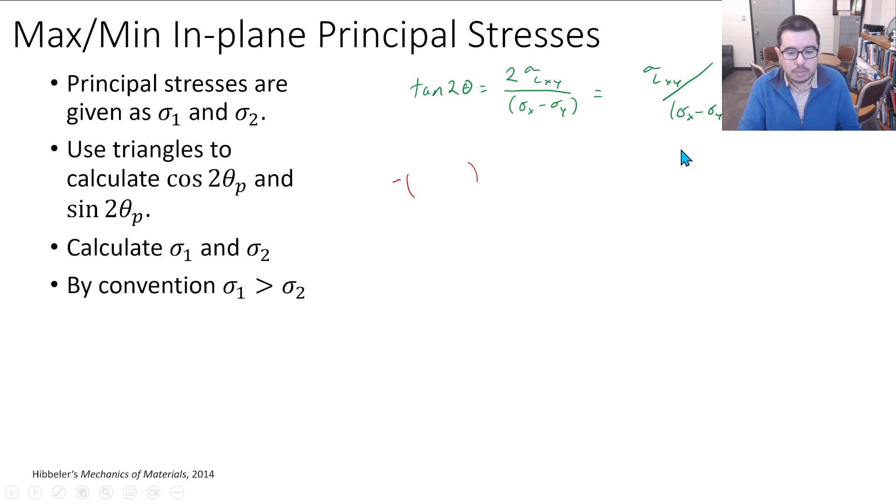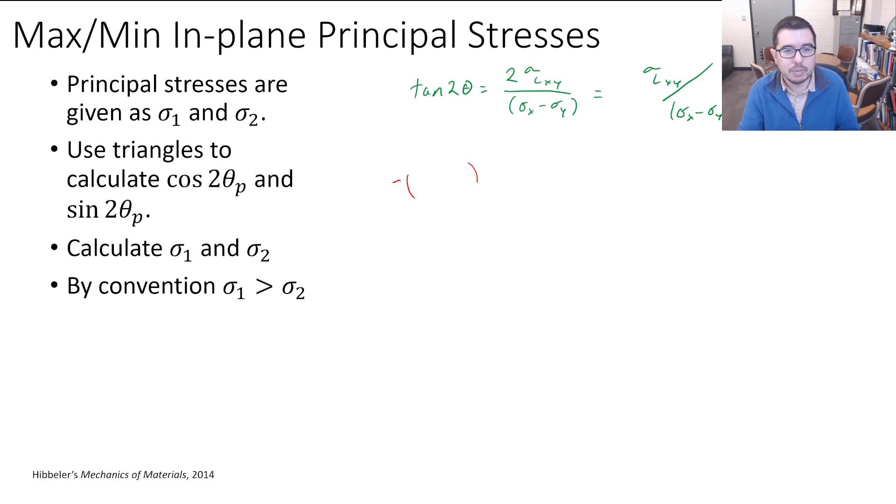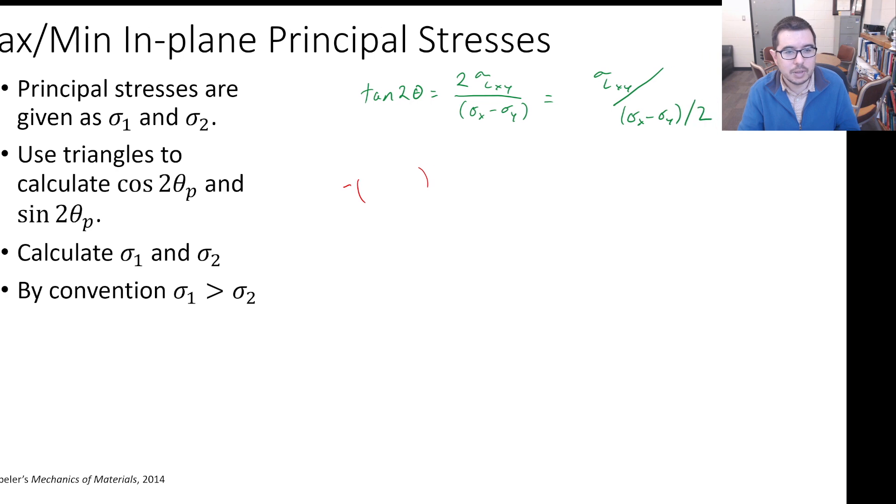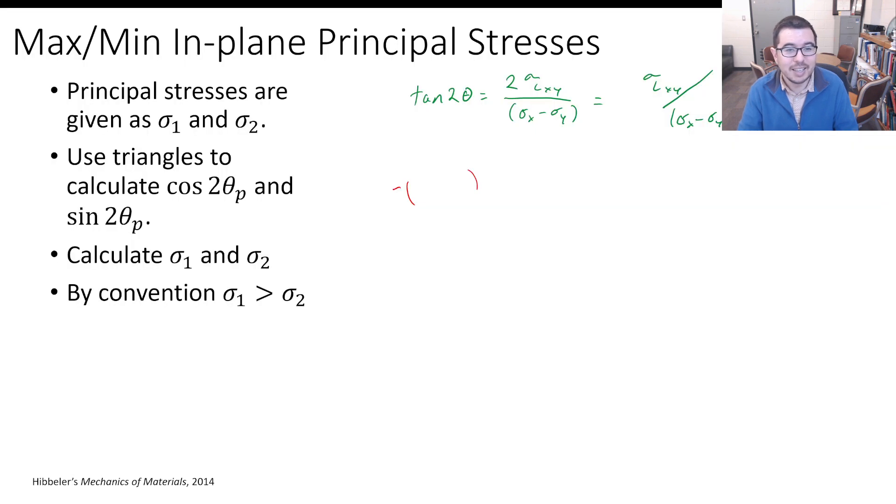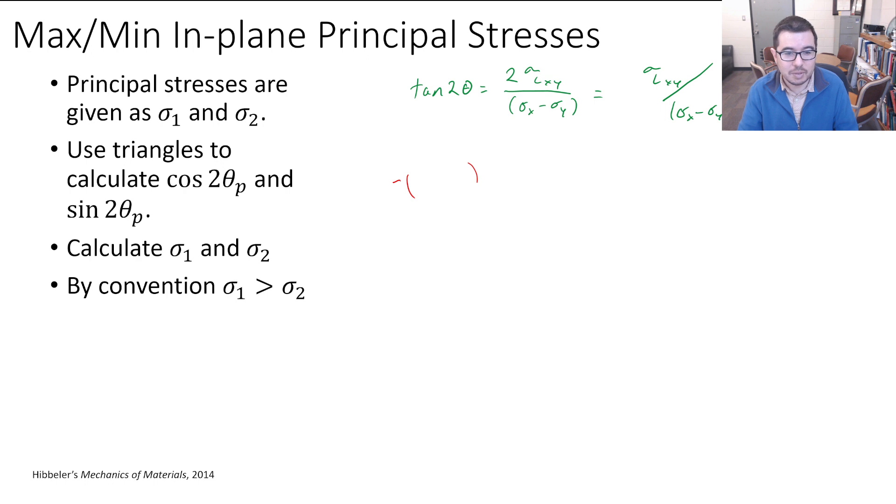This is actually equal to tau xy over sigma x minus sigma y divided by two. Sorry, it got cut off here. Let me move this temporarily so you can see what it is. Hopefully I didn't mess up anything. All right, here we go.